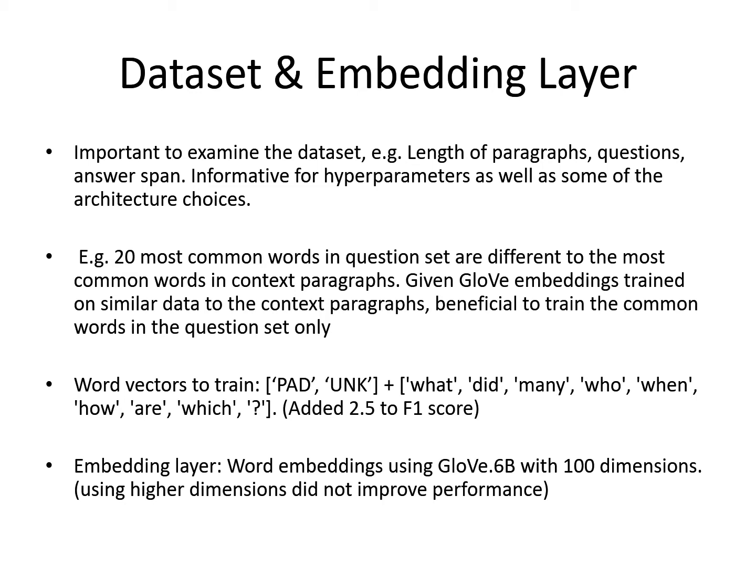For example, it was through looking at the dataset that I decided that a specific set of word embeddings should be trainable. This is because I noted that a lot of the common words in the question set are different from the most common words in the context paragraph. Given that the GloVe embeddings are trained on similar data to the context paragraphs, i.e. Wikipedia data, it's likely that training the most common words in the question set would be beneficial.